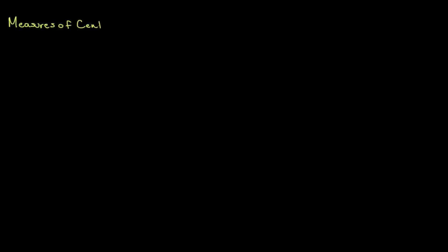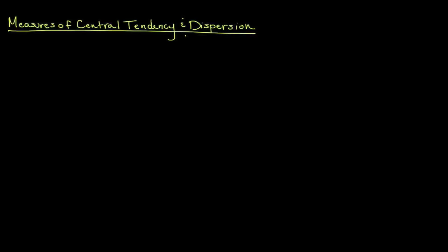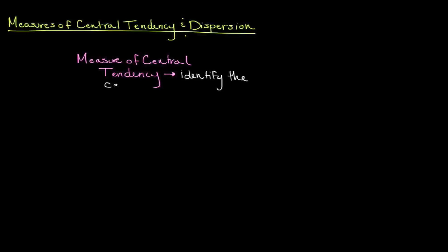Continuing our discussion of descriptive statistics, we're going to talk about measures of central tendency and measures of dispersion. Both of these help us gain a better understanding of quantitative data. Measures of central tendency, sometimes called measures of central location, are meant to identify the center of a set of values. Common measures of central tendency include the mean, median, and mode.